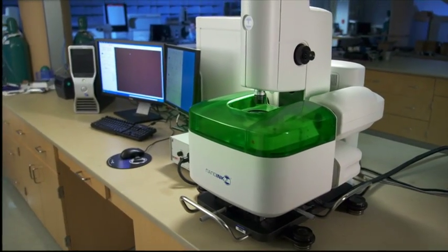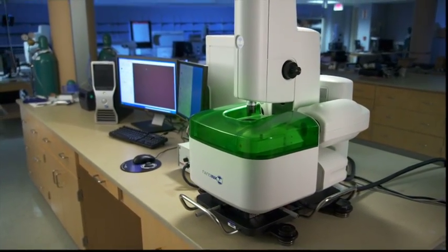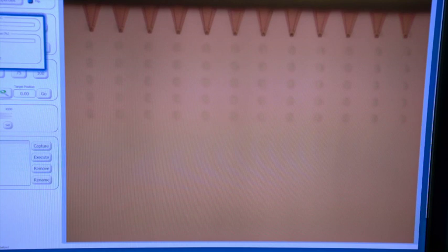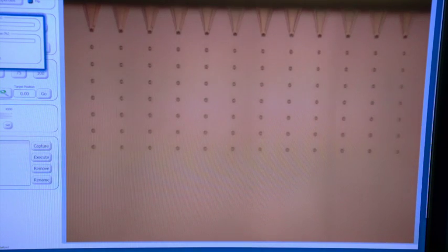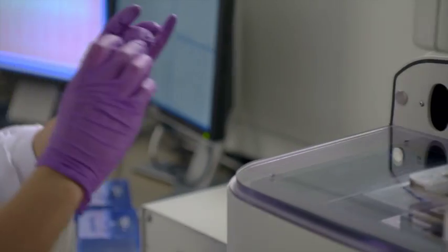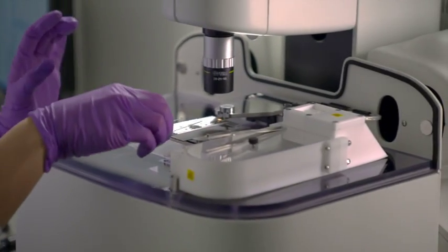The NanoArrayer 3000 component uses patented dip-pen nanolithography technology to deposit thousands of uniform dots or features of capture antibody in the area occupied by just one spot on a conventional protein microarray. This miniaturization and precision enables highly multiplexed protein analysis on a single slide.